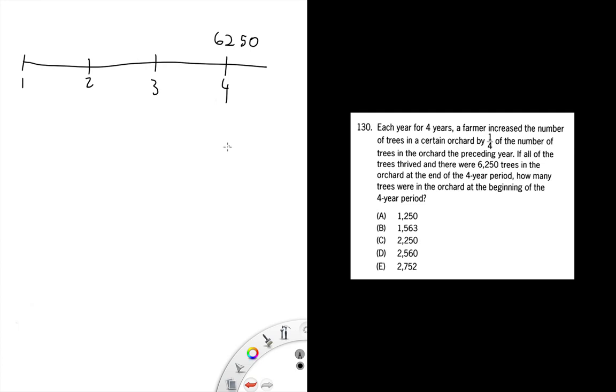We're also told that the number of trees grows by a fourth every year. If you're growing by a fourth, it means that you multiply whatever you had by five-fourths. That's how you grow something by one-fourth - that's basically one-fourth plus one. So from year zero to year one you grew by that, and so on up until the end.